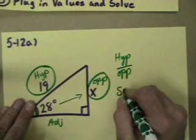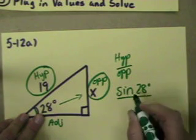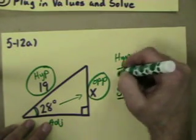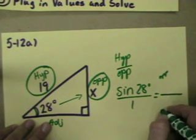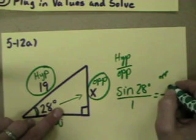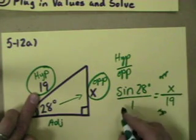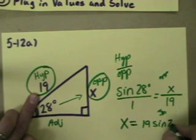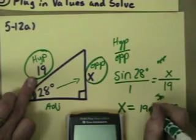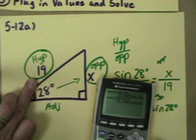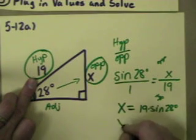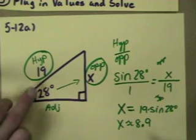The sine of 28 degrees over 1 needs to equal the opposite over the hypotenuse. Even though I wrote it this way, remember that sine is always opposite over hypotenuse. Opposite is x, hypotenuse is 19. Cross multiply, I'll get 1 times x which is x, and then I'm going to write this as 19 times the sine of 28 degrees and I'm going to put it on the calculator because that's multiplication. 19 times the sine of 28 degrees is, I'm just going to round it to the tenth place, about 8.9. So x is about 8.9.